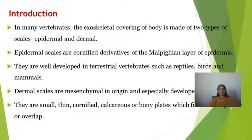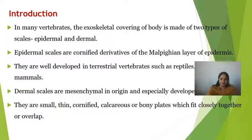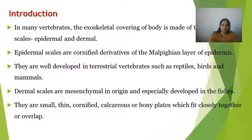In many vertebrates, the exoskeleton covering the body is made up of two types of scales: epidermal scales and dermal scales. Epidermal scales are present in terrestrial habitats like reptiles, birds, and mammals. Dermal scales are of mesenchymal origin and present in fishes. They are small, thin, cornified, calcareous, and bony plates which fit closely together to overlap.